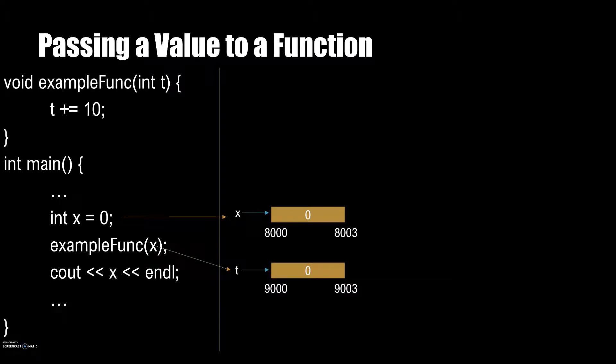Next, we call the function passing x. This is the key part. When we pass x to the function, the value in the x variable, that is 0, gets copied into a different memory location, let's say 9000, and is then given to the function we called. Once in the example function, the value at address 9000 is changed to 10, and then the function terminates, taking us back to main.